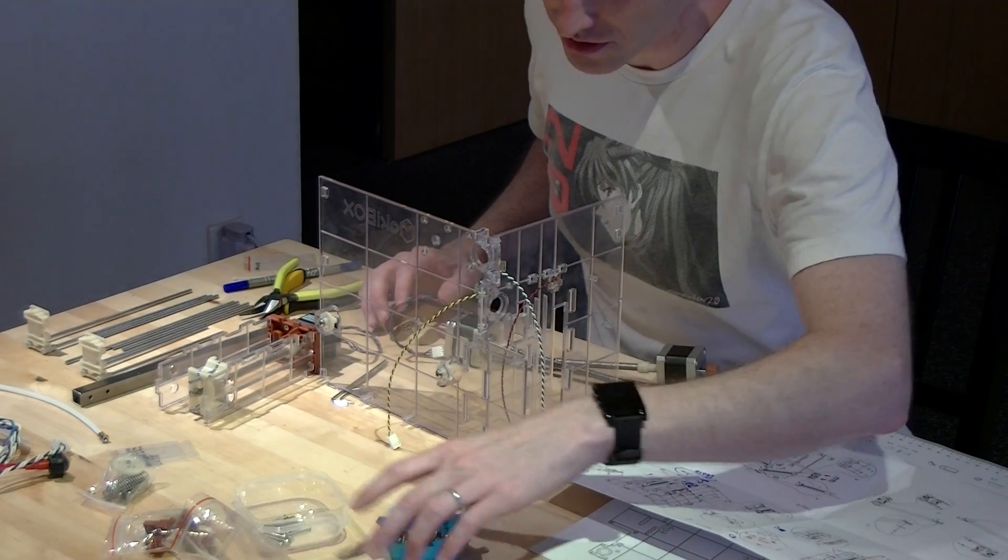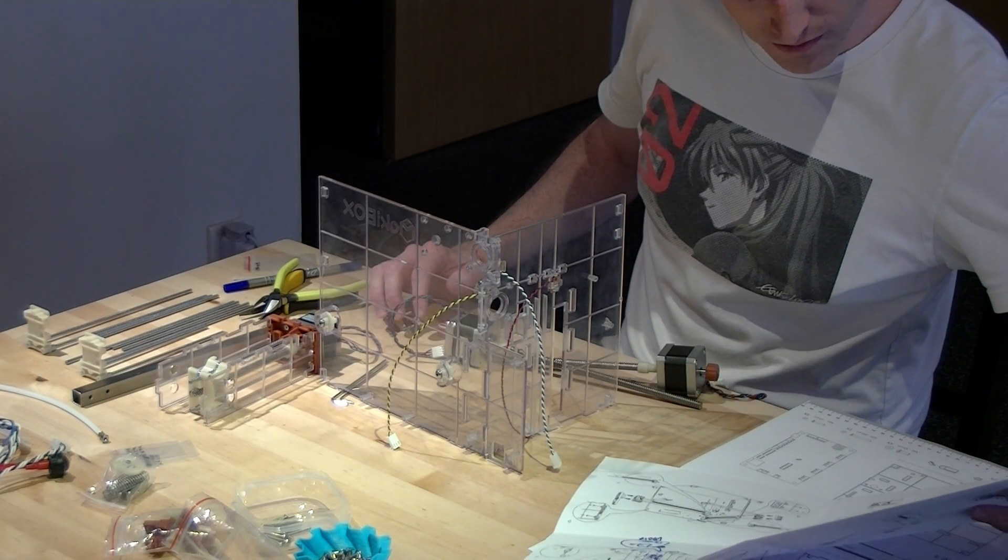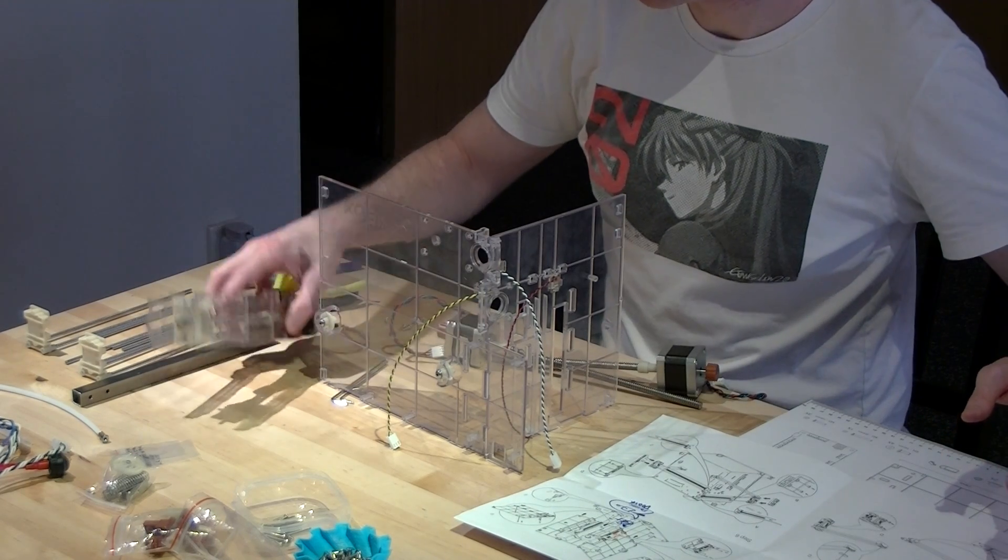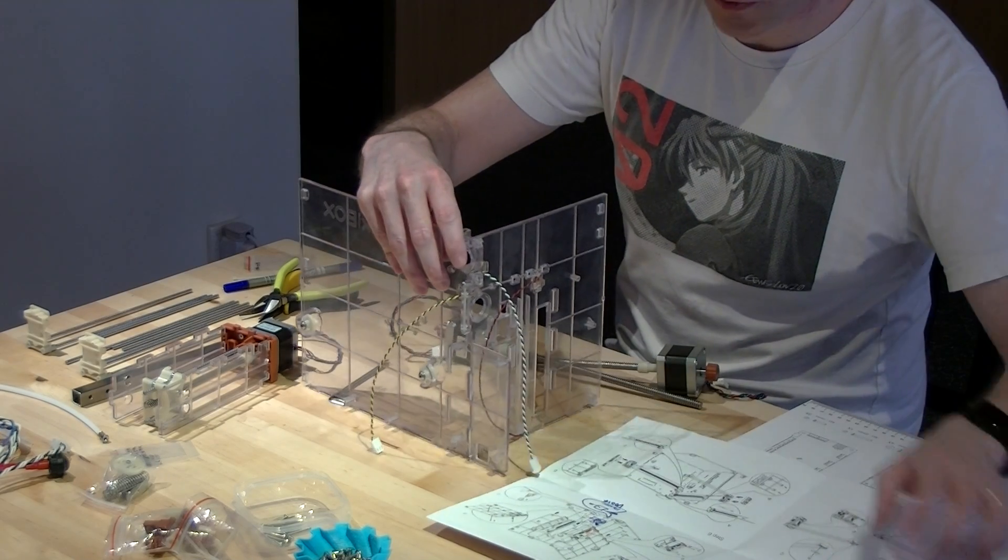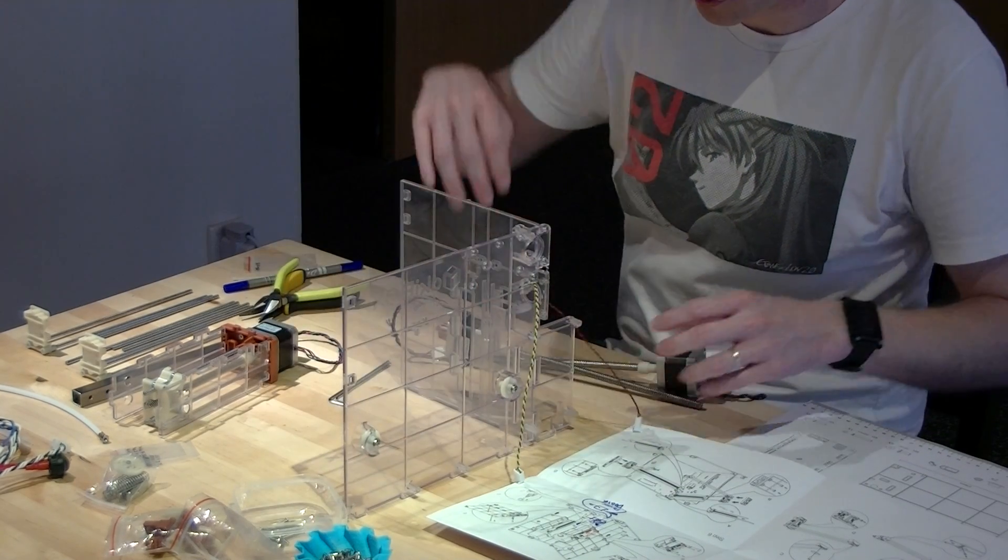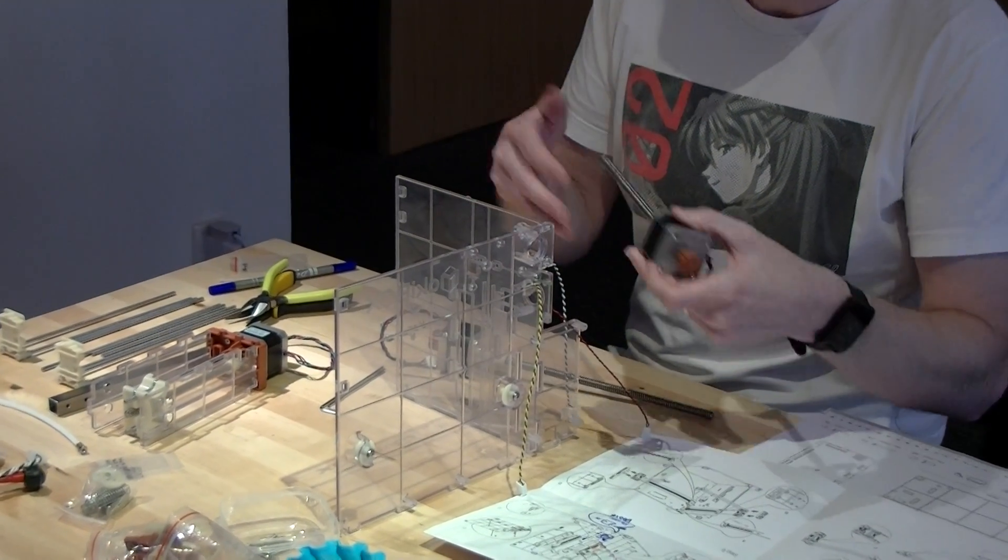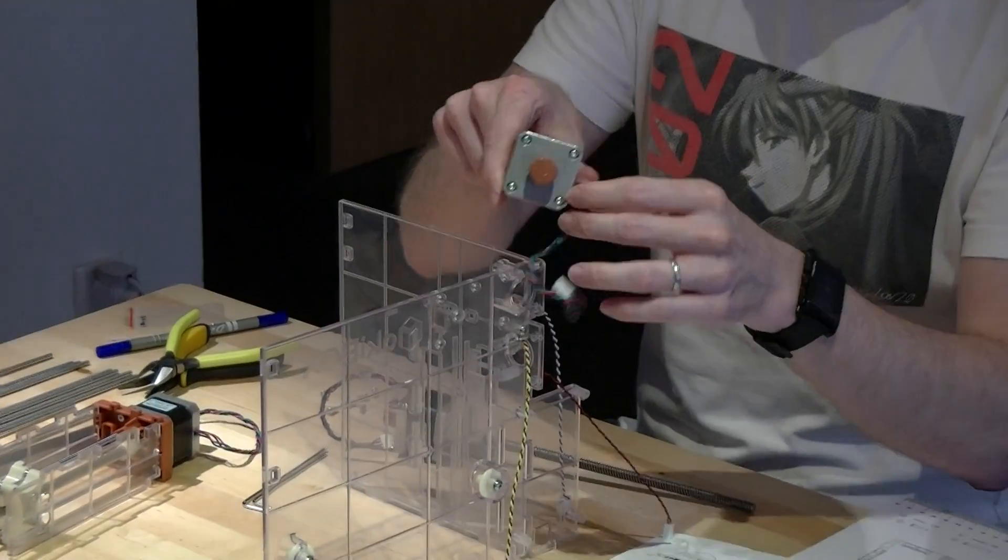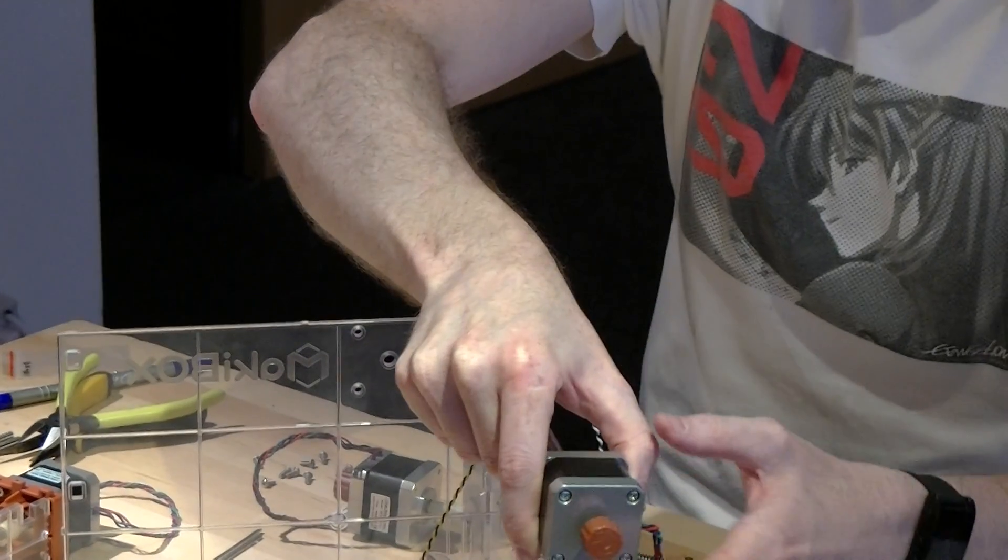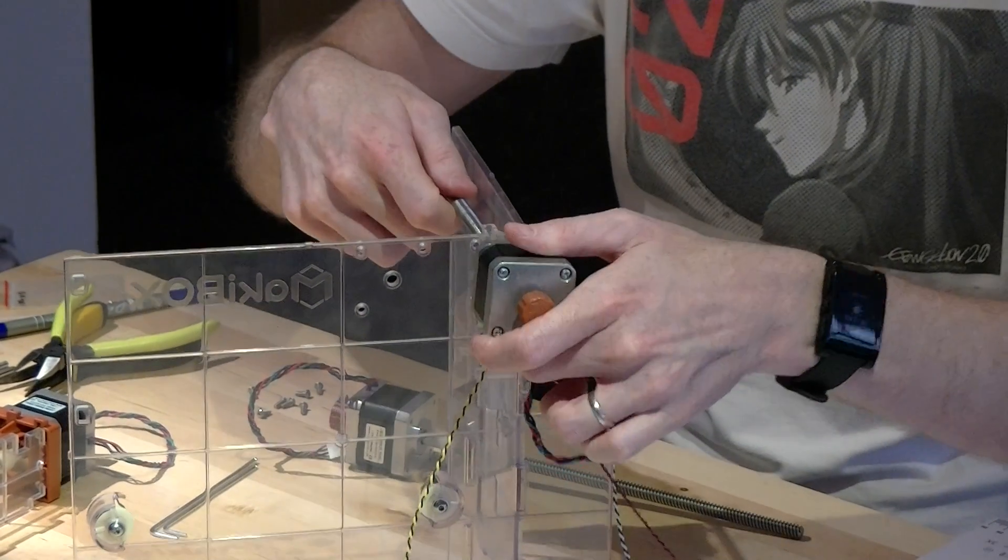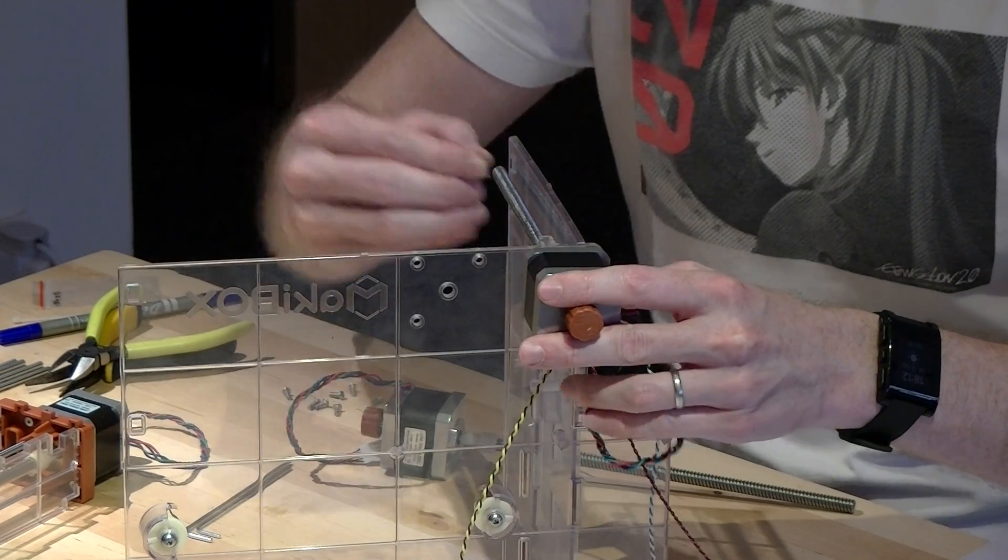Okay, and then you'll also need your Z assembly that you've already done. So first step, easiest place to start will actually be to put your X axis in. Now, generally, you want to put the wires going out this direction. So if you just feed them through like that and have the wires coming out the side.